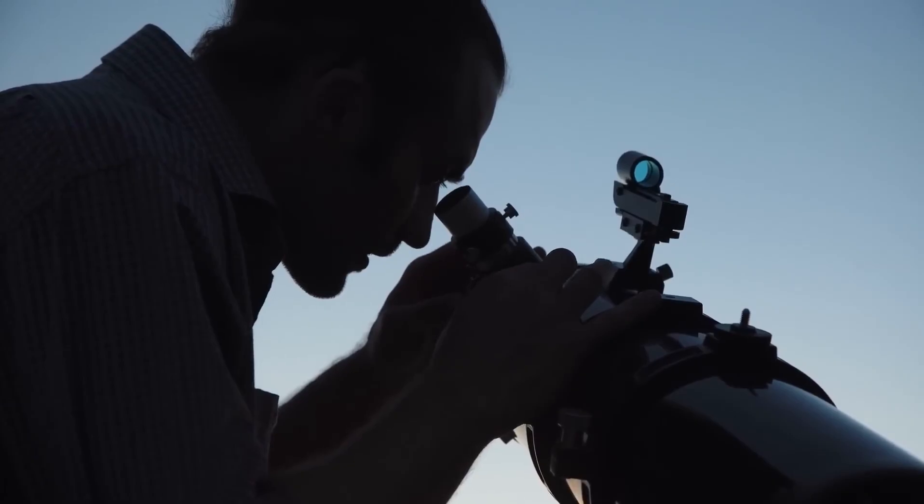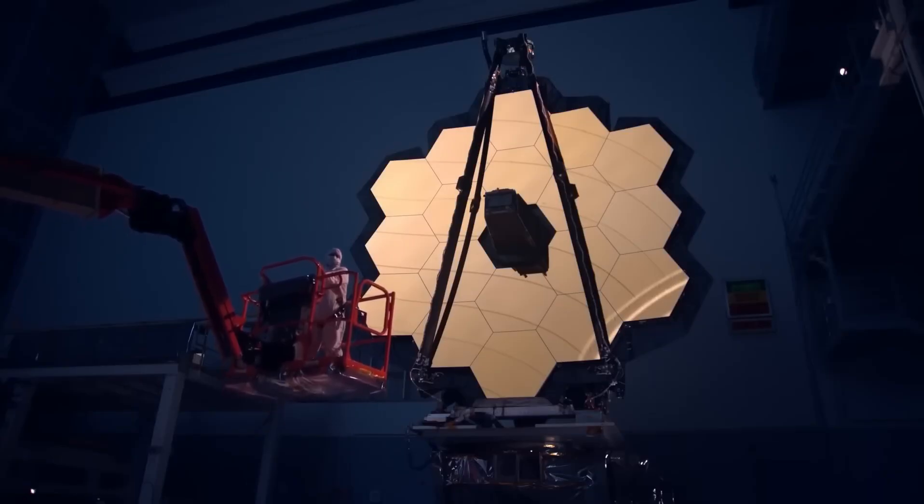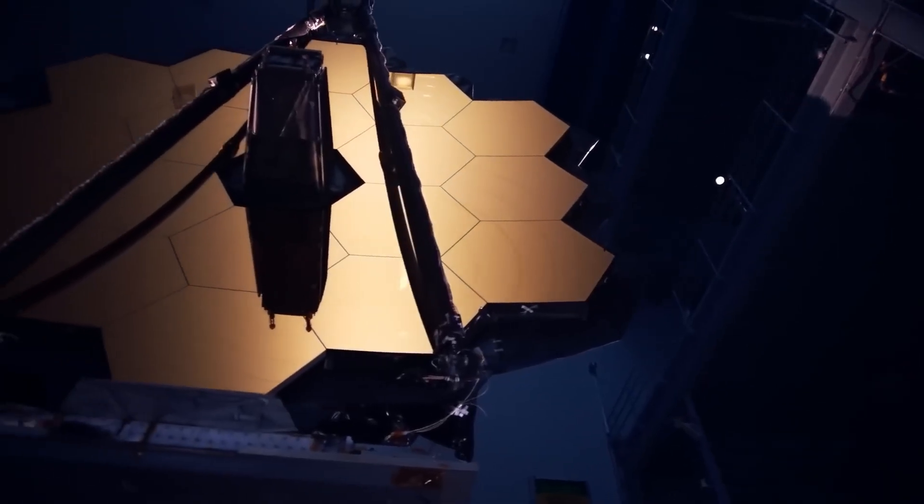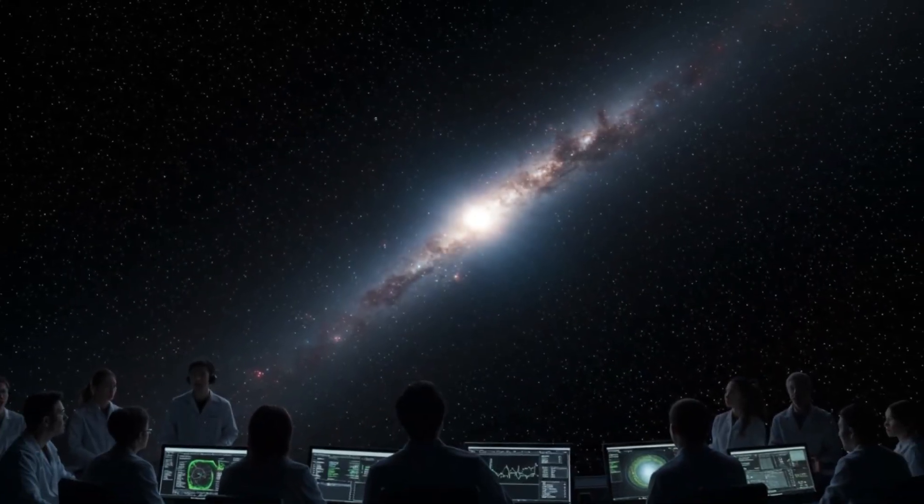In a corner of the sky filled with ancient light, the James Webb Telescope captured what looked like a simple yellow splotch. But when astronomers took a closer look, their assumptions collapsed. That tiny glowing blob wasn't just another galaxy.